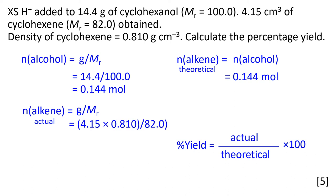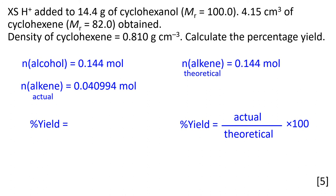The actual amount of the alkene is mass over molar mass, where the mass comes from density times volume. From the question: the volume is 4.15 cm³ and the density is 0.810 g/cm³. Now it's just a matter of putting the theoretical and actual amounts into the percentage yield equation. One of the in-process results did not round neatly to three significant figures, so I've included five significant figures to avoid rounding errors.